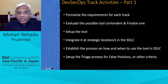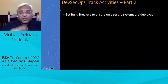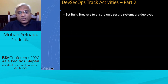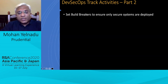It's always a good idea to set up build breakers or gating mechanisms to ensure only secure systems are deployed to production. Automating this is preferable over having a QA team doing it manually, as manual processes introduce delays and human errors.